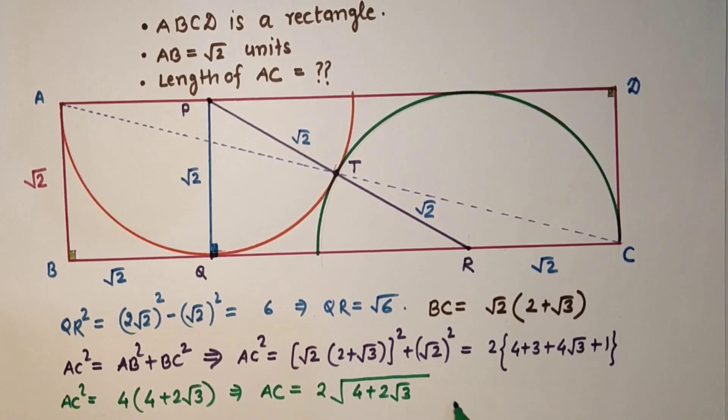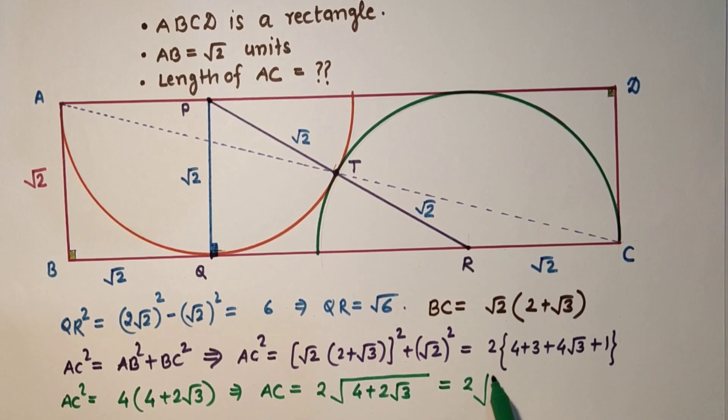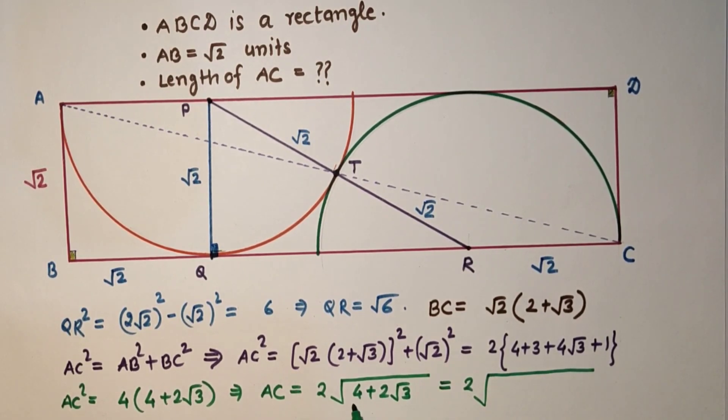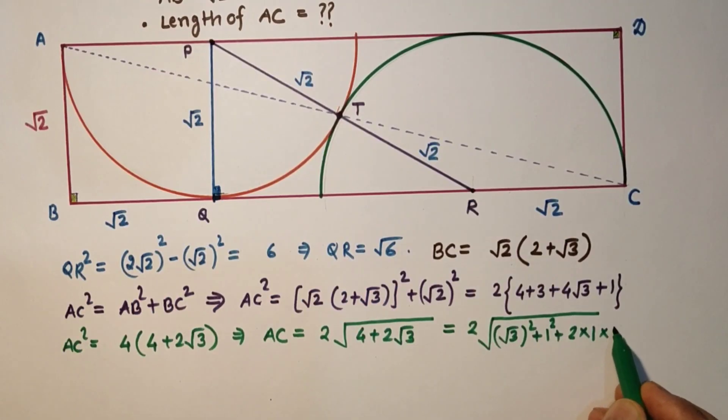This can be further rewritten as 2 times the square root of 4 plus 2 root 3, where 4 is root 3 squared plus 1 squared plus 2 times 1 times root 3.